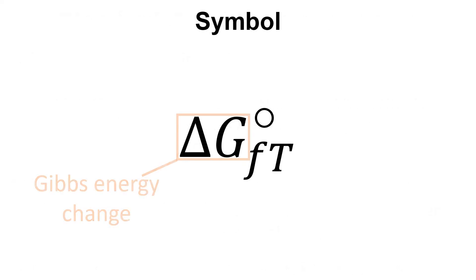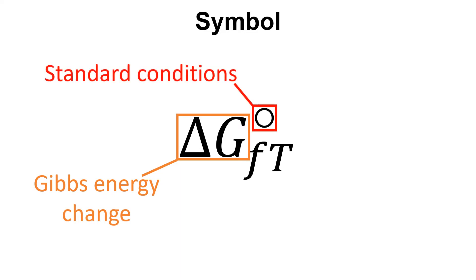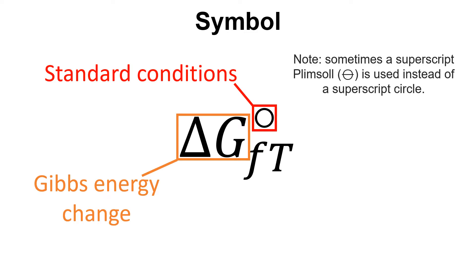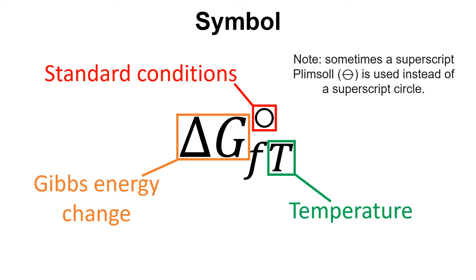In terms of the symbol, we have delta G to represent Gibbs energy change, a superscript circle to represent standard conditions — sometimes replaced with a superscript plimsoll. We also have a subscript temperature indicating the temperature at which this value is relevant, and a subscript F to represent that this is a formation reaction — the Gibbs energy change of formation.